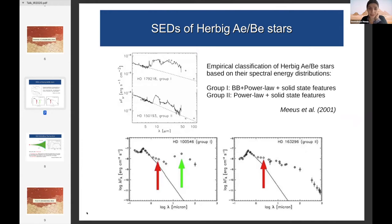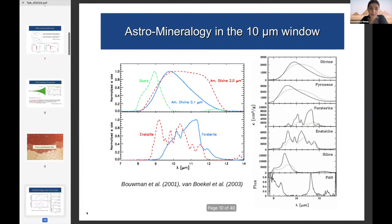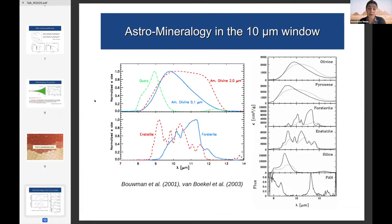We talked about Group 1 flared discs and Group 2 flat discs, and we'll see how that idea changed over the years. Now focusing on the dust: the 10 micron atmospheric window is fantastic because it tells you a great deal about the dust. Looking at optical constants of silicate material, the upper panel shows amorphous dust and the bottom shows crystalline dust.